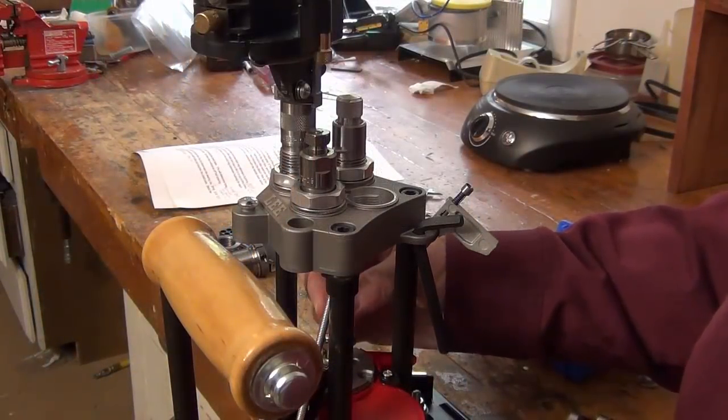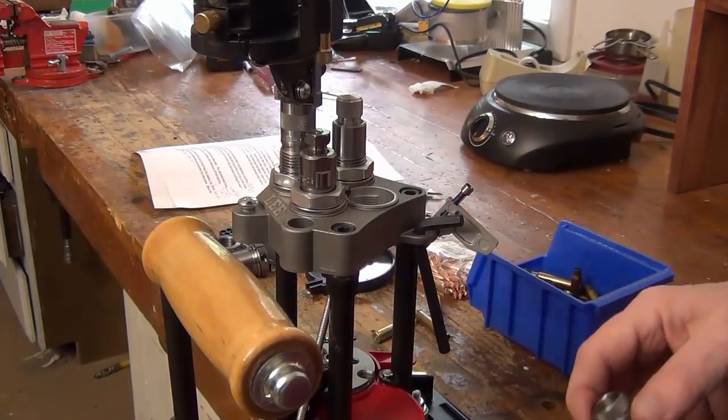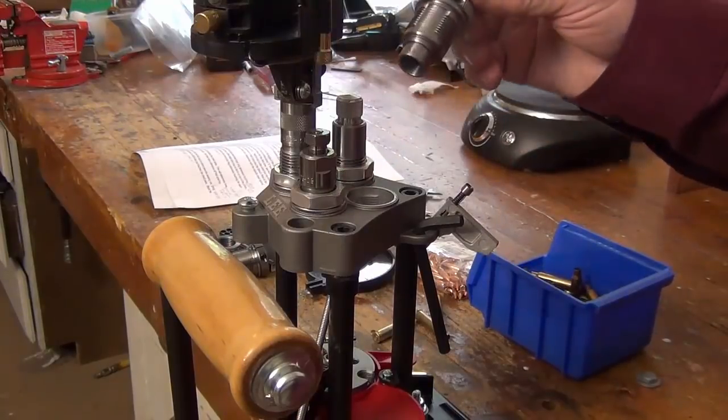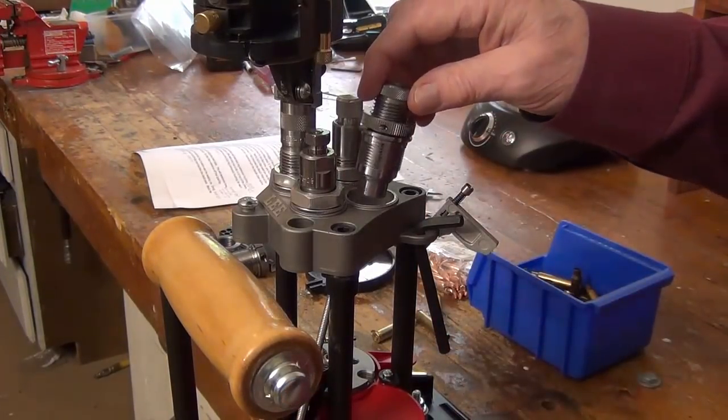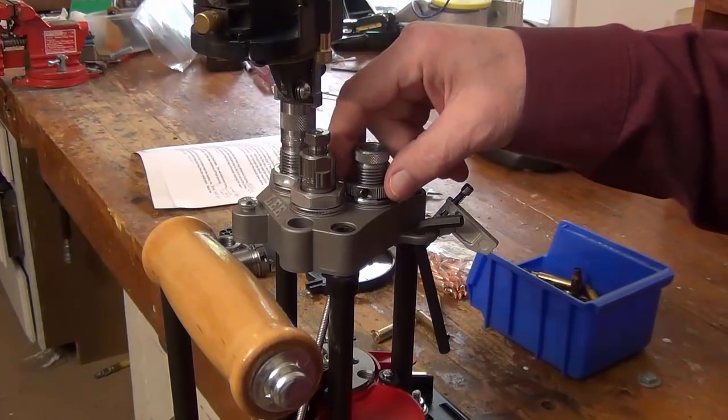Right here you have the rod that operates the shell plate rotation and that is captured and held in place by the special lock ring eliminator.